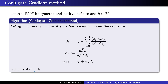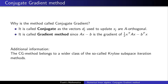There is one last question: why is this method called the conjugate gradient method? It's called 'conjugate' because the vectors d_j used to update the iterates x_j are A-orthogonal — conjugate is just another word for this. It's called a 'gradient' method because A x − b is the gradient of the function F. The combination of both gives the name: conjugate gradient method.